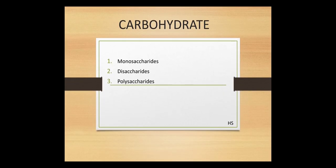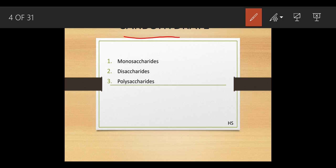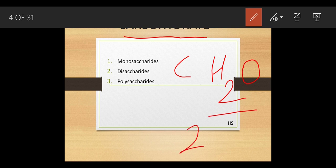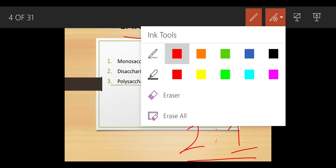Now we discuss the first class: carbohydrates. The word 'carbo' means carbon and 'hydrate' means water. In carbohydrates, hydrogen and oxygen are always combined in a 2:1 ratio. Carbohydrates have been broadly classified into three parts: monosaccharides, disaccharides, and polysaccharides.